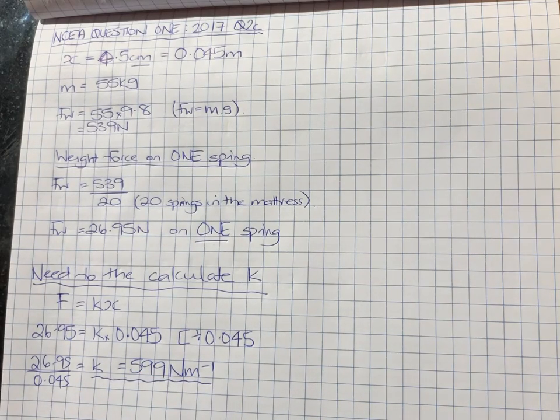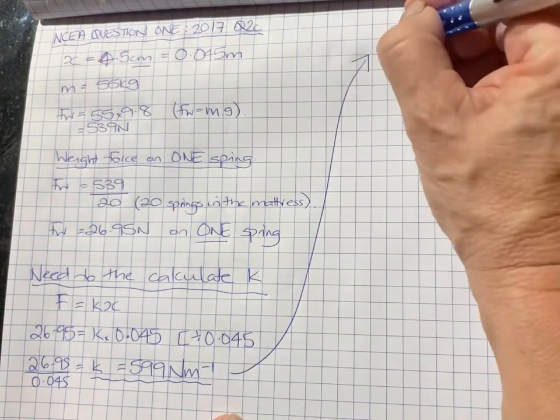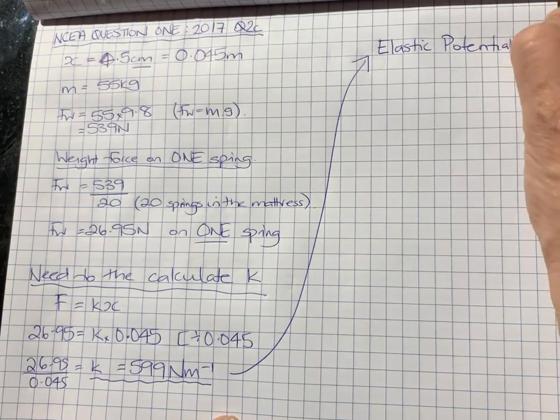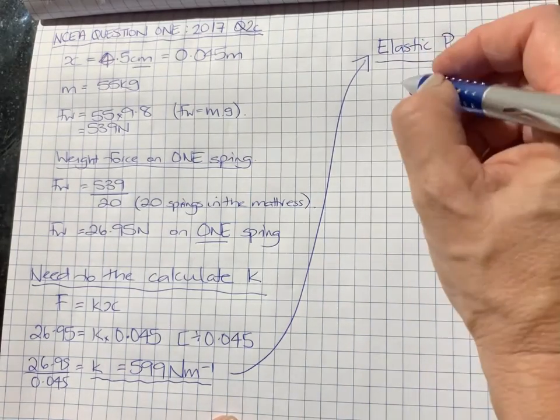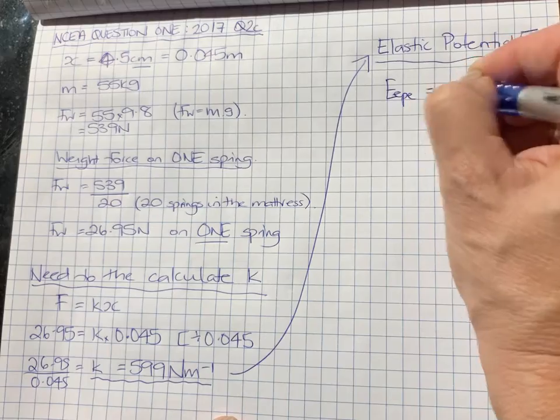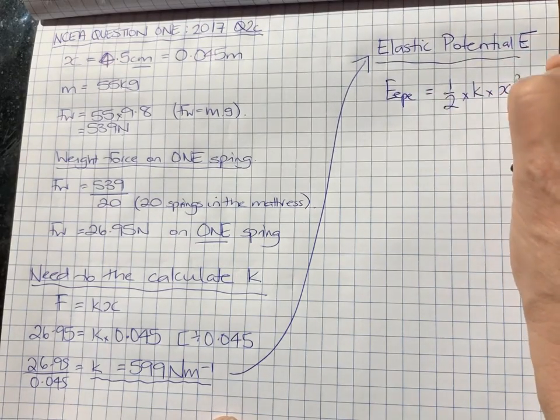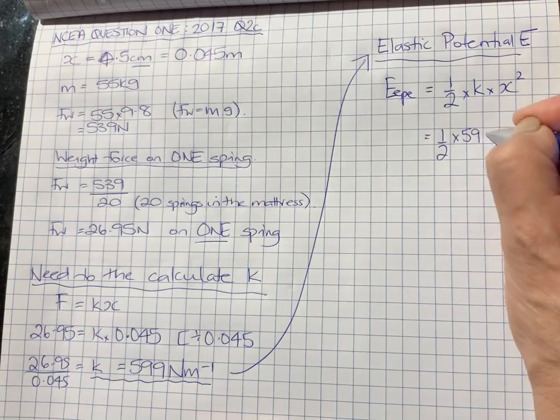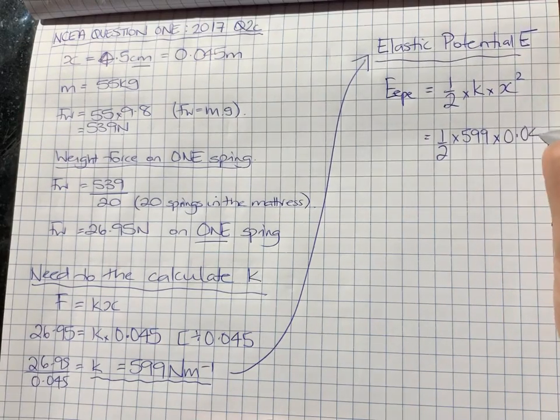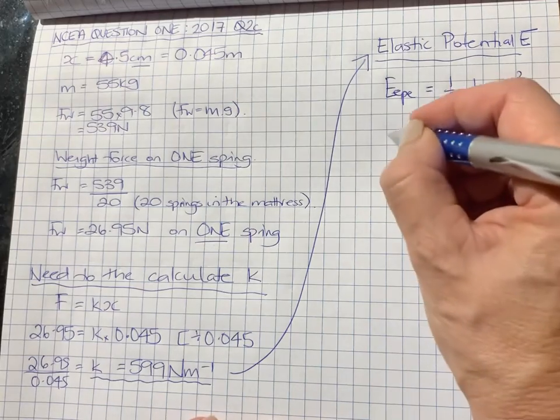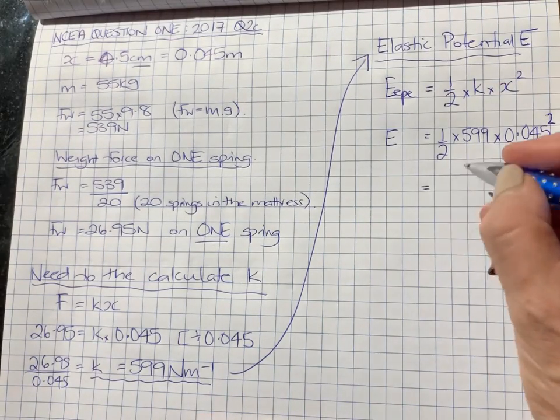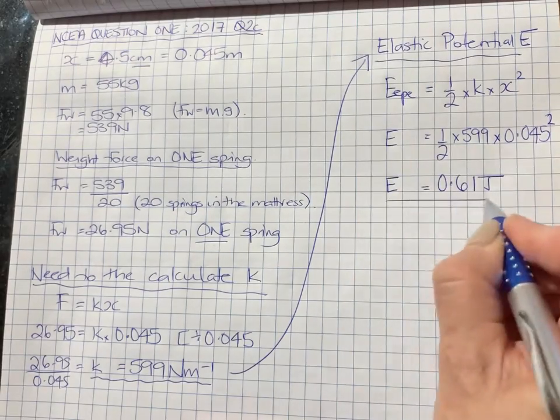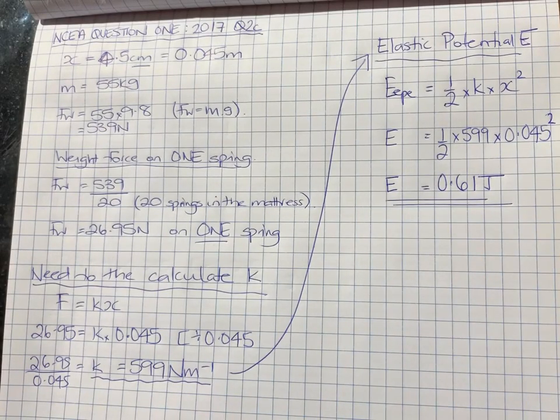Now we've got everything we need to work out the elastic potential energy. The formula for elastic potential energy is 0.5 times k times x squared, which you'll get given on your resource sheet, so you don't need to learn that. So it's 0.5 times 599 times 0.045 squared, and that gives us 0.61 joules. That is the elastic potential energy stored in a single spring.